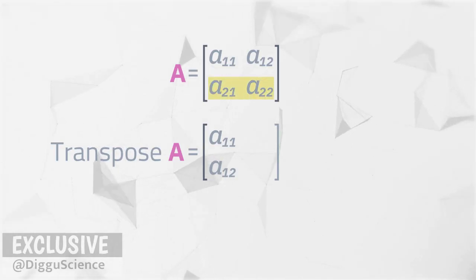The elements in row 2 are a2-1 and a2-2. In the transpose of matrix A, row 2 will become column 2.